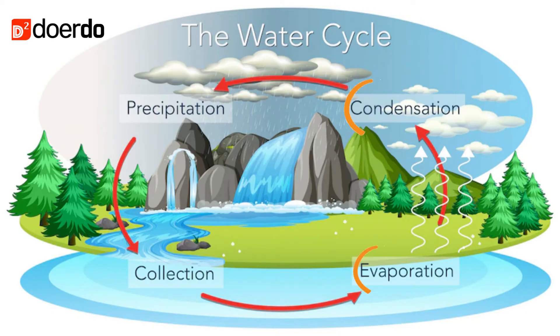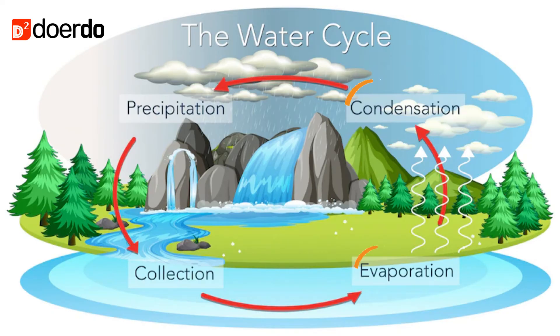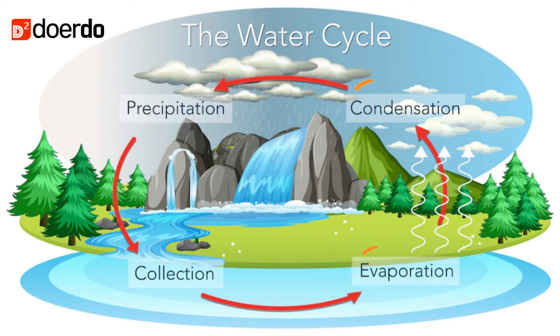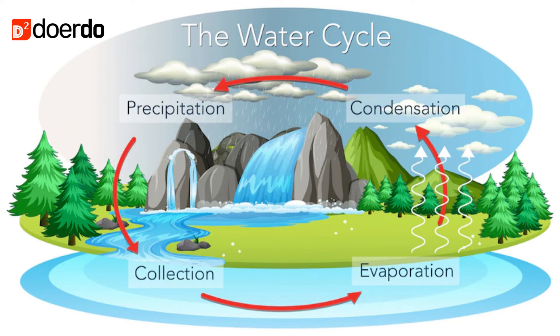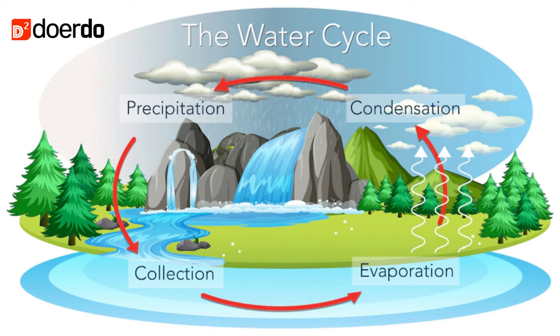Water cycle occurs continuously due to the condensation and evaporation of water. Condensation and evaporation happen to ensure that the water cycle continues.